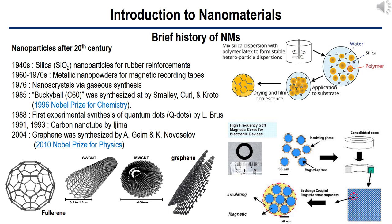In the 1960s and 1970s, metallic nanopowders for magnetic recording tapes were developed. Nanoscale metallic nanoparticles can be used for high-frequency soft magnetic cores for electronic devices such as semiconductor-based power transduction modules. For the cores, a magnetic phase core is surrounded by insulating shells, then transformed into consolidated cores where the core-shell nanoparticles are assembled into a confined geometry. In 1976, for the first time, nanocrystals were produced by the now-popular inert gas evaporation technique.